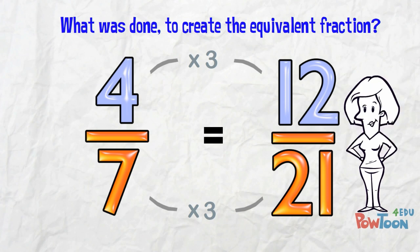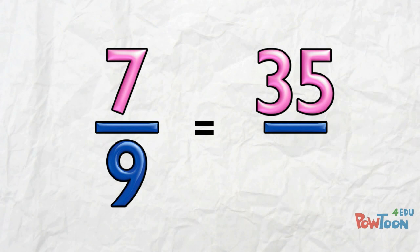Now, having seen that thinking demo, let's try one that needs finishing. Here's our unfinished fraction pair. We have two numerators, 7 and 35.